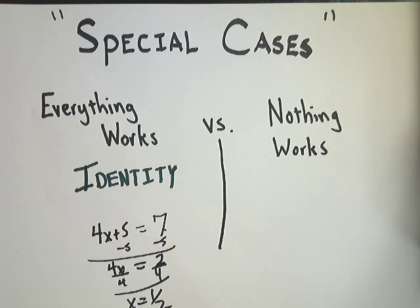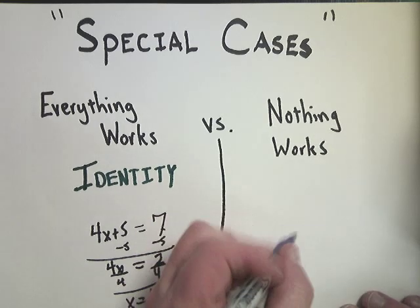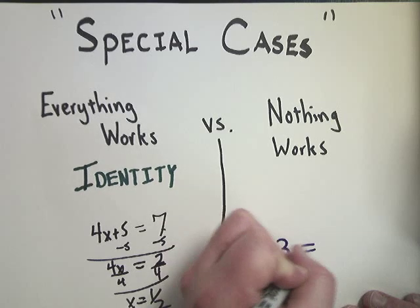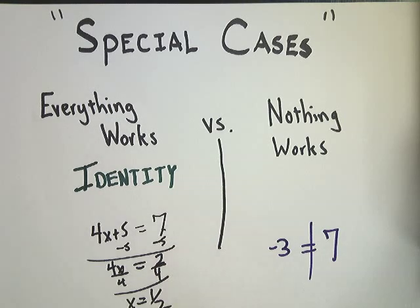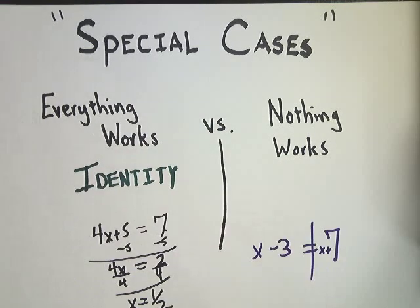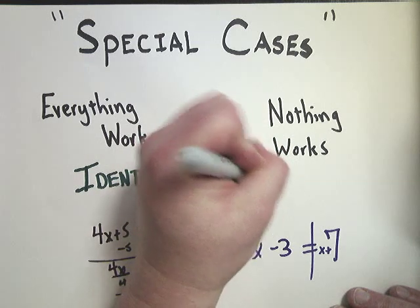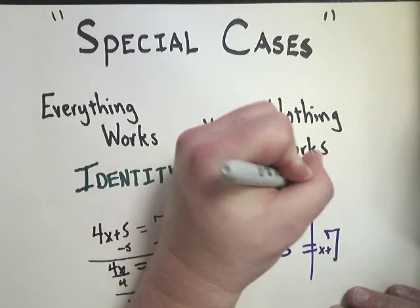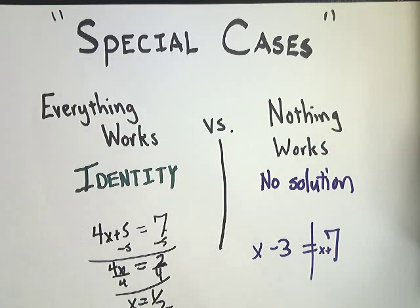And then on the other side, no matter what you plug in, it's never going to lead to a true statement. Anytime we can plug in anything and it's true, we're going to refer to this in an equation sense as an identity. You may also see, which basically means one side equals the other, you may also see it called all real numbers. But in the equation sense as an identity, because one side is equal to the other.